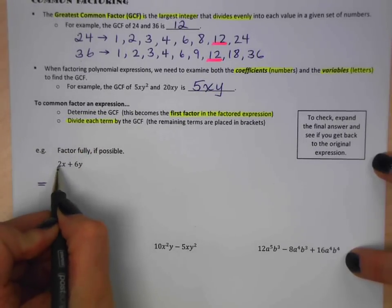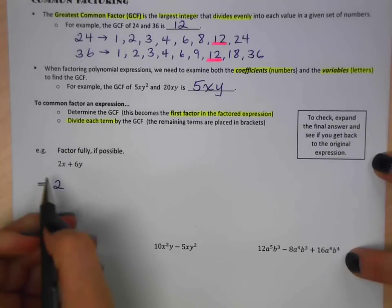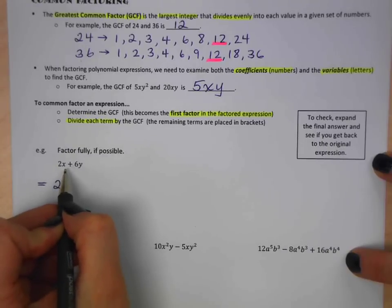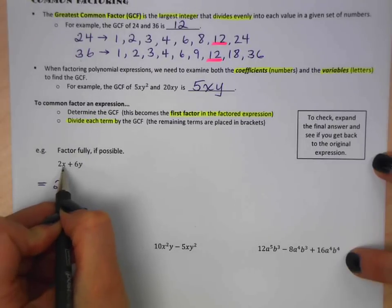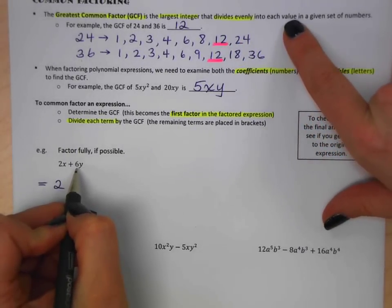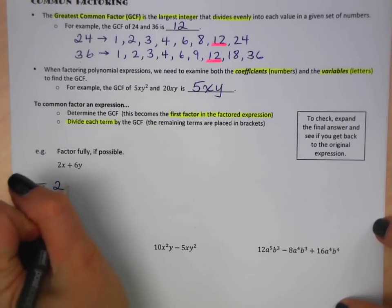So the first thing is to determine the greatest common factor. Well, we have coefficients of 2 and 6. 2 is the greatest common factor between these. And then we look at it and say, do we have variables in both? So I have an x here, but no x there. And I have a y here, but no y in this term. So I can't take out an x or a y because it's got to divide evenly into each value. So I can't do anything else.